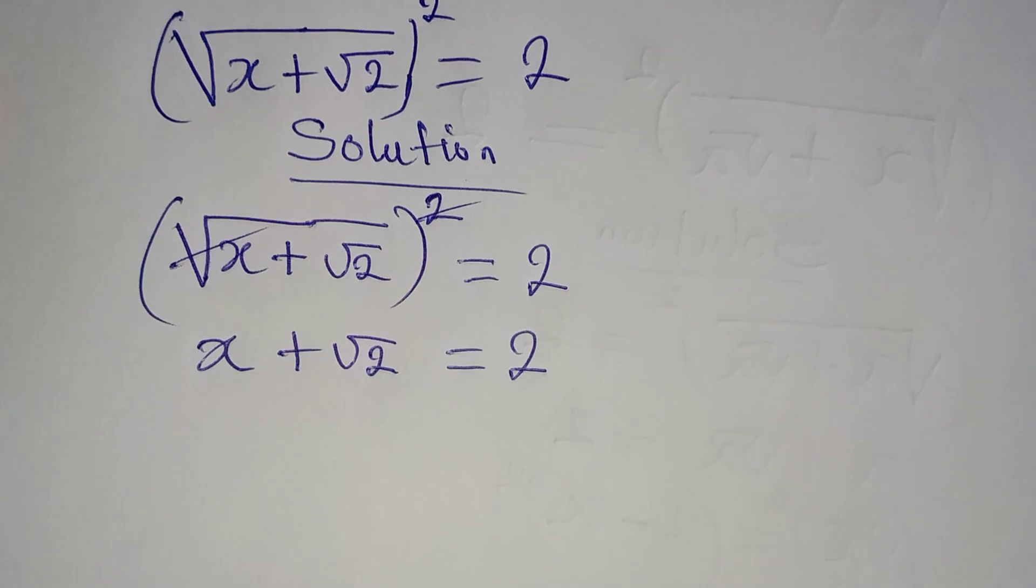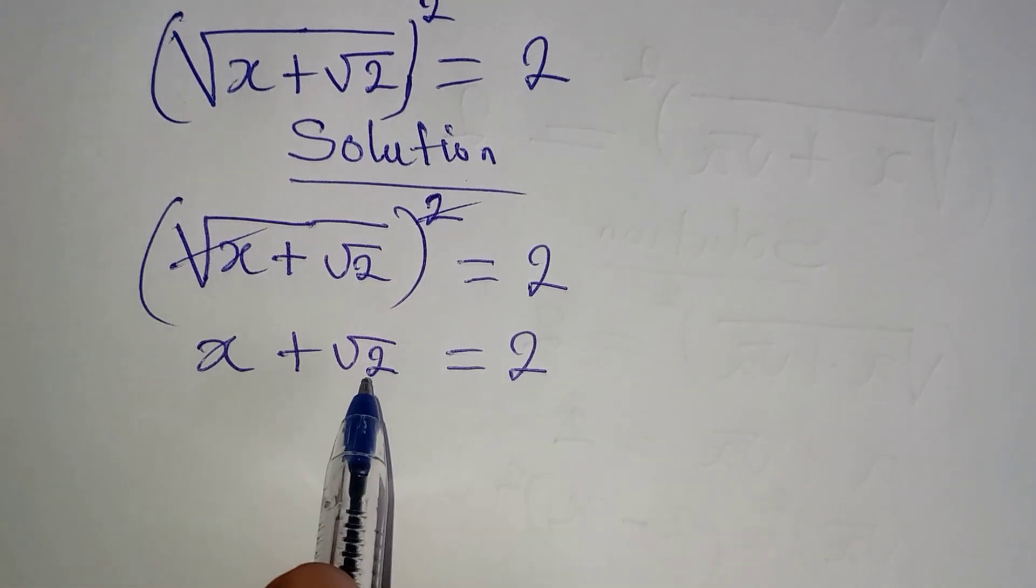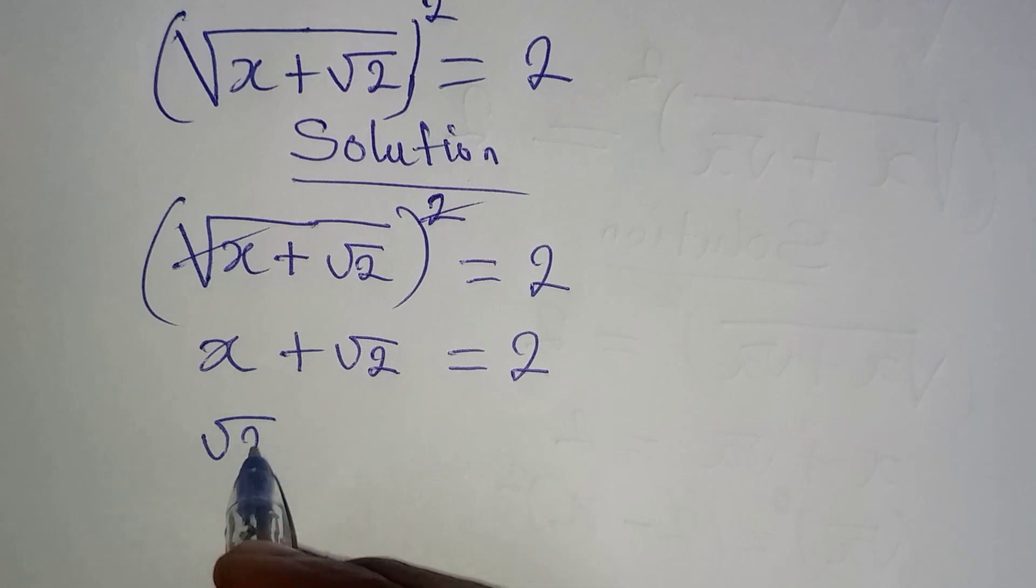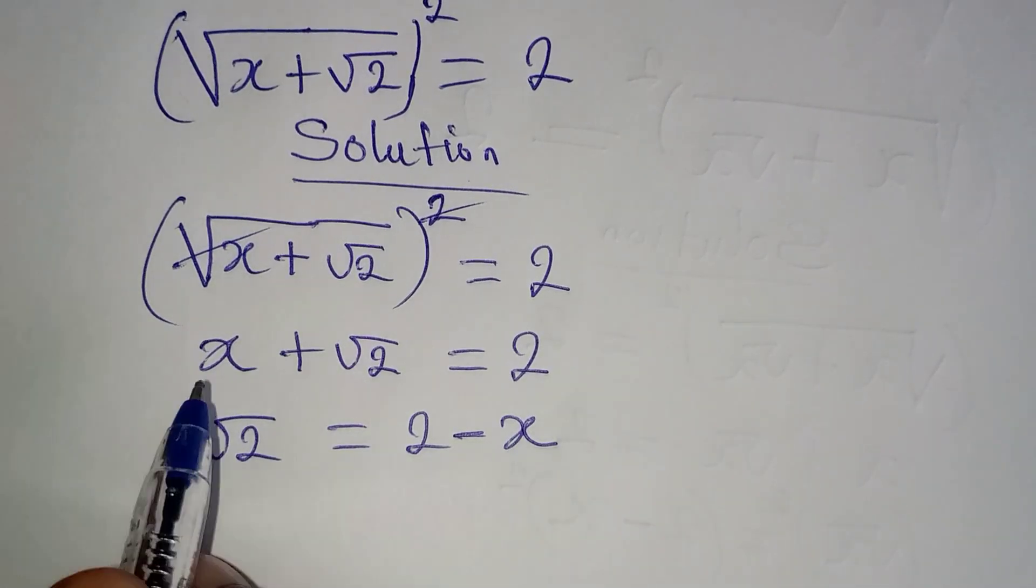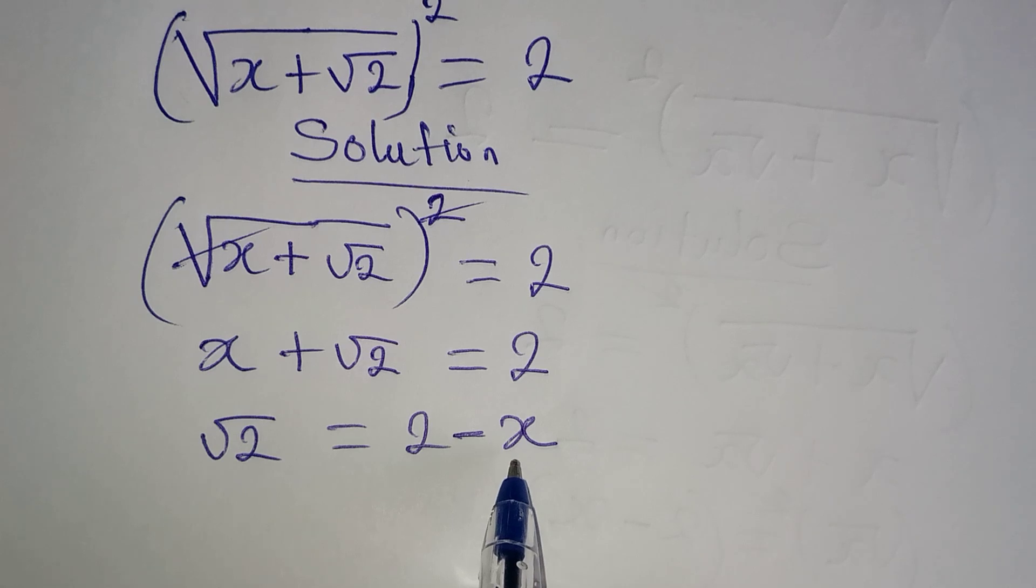Now the next step is to make root 2 the subject. And when I do that, root 2 will be equal to 2 minus x, because this plus x becomes minus x on the right.